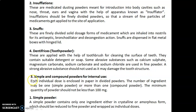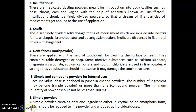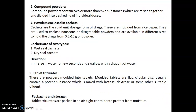The third class is simple and compound powders for internal use, which is the main class of powder. Each individual dose is enclosed in paper in divided powders. The number of ingredients may be one, a simple powder, or more than one, a compound powder. The minimum quantity of powder should not be less than 100 mg. A simple powder contains only one ingredient in crystalline or amorphous form, reduced to fine powder and wrapped as individual doses. Compound powders contain two or more substances mixed together and divided into the desired number of individual doses.